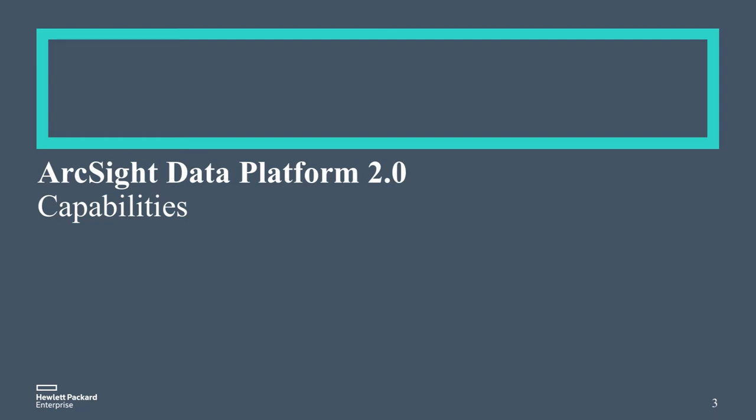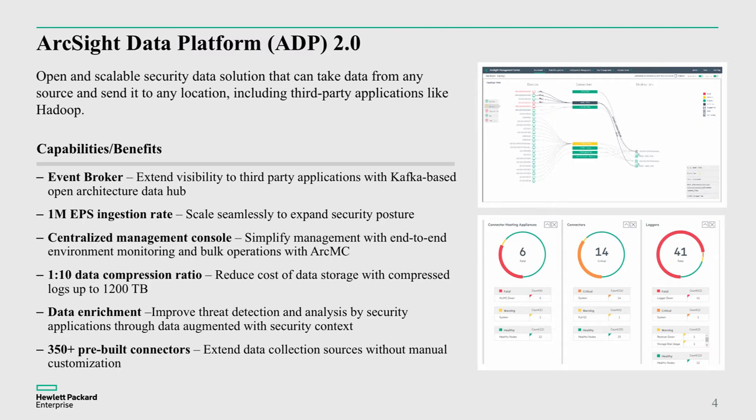Let's dig into the capabilities specifically. The data platform uses the Event Broker to provide the distribution mechanism. This builds on a Kafka-based system that's enterprise-ready with very high availability, resiliency, and clustering as a built-in data distribution mechanism. It's centrally managed through what we call ArcMC, or the ArcSight Management Center. It provides data storage using Logger at very high compression rates, and data enrichment using connectors to collect, enrich, and add context to that information — ensuring it adds meaning as we collect data at enterprise scale.